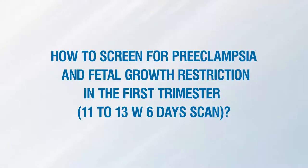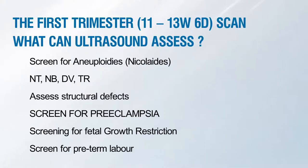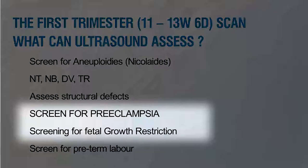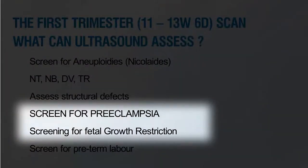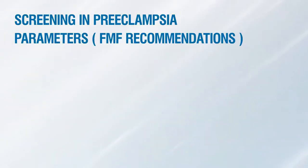How to screen for preeclampsia and fetal growth restriction in the first trimester scan — that is the 11 to 13 weeks 6 days scan. During our NT scan, along with screening for aneuploidy and assessing structural defects, we need to screen for preeclampsia and fetal growth restriction.